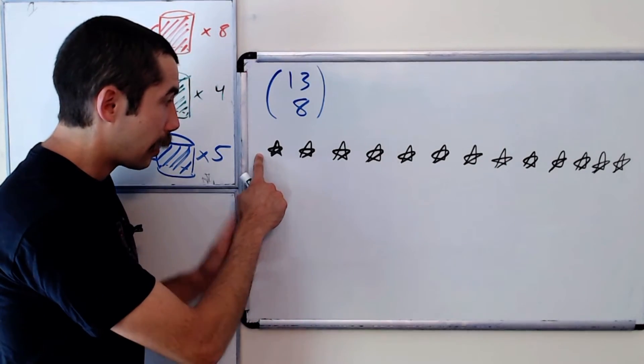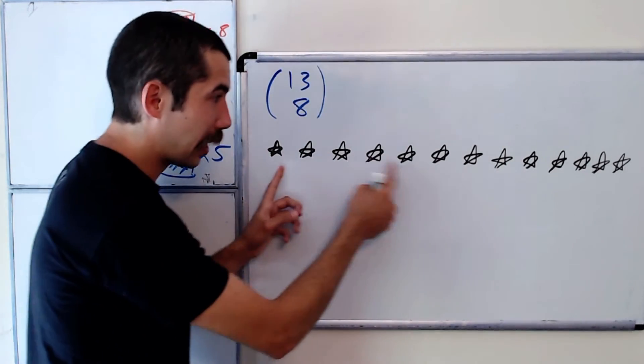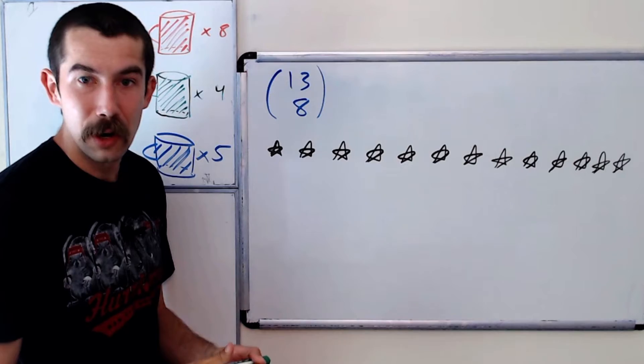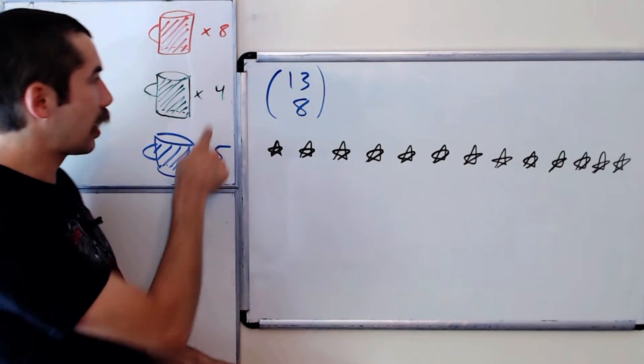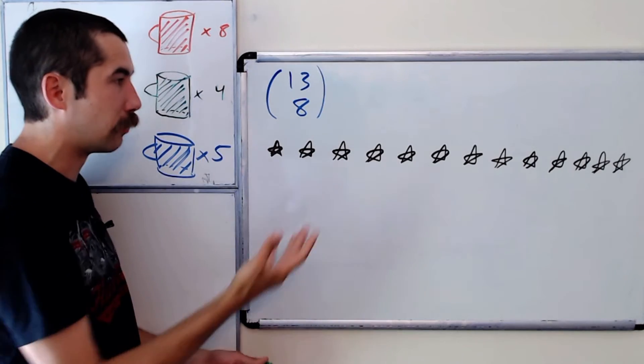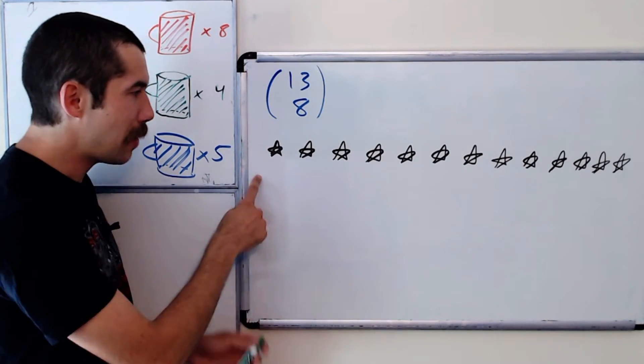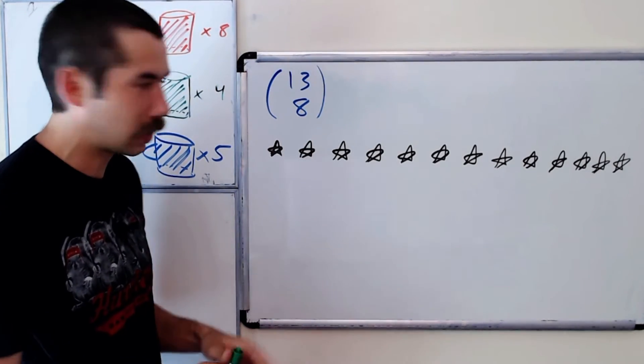So in each gap between these two mugs we already placed, we could either put a green or we don't put a green. And we have to figure out how to do that for just the four mugs. And so how many total gaps are there between the mugs?